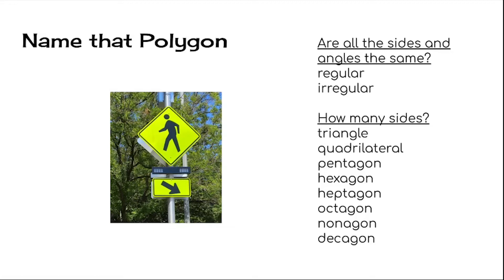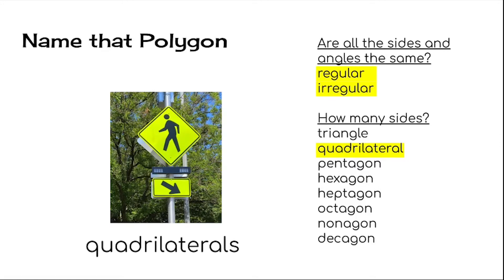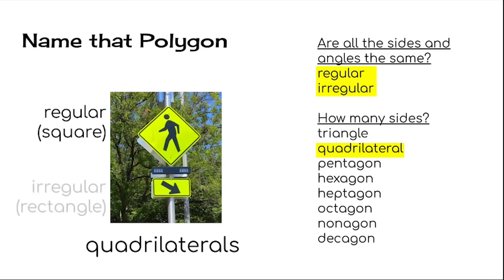I saw this sign, and it has two polygons on it — one is the part with the person walking, and the other is the part with the arrow. Are all the sides and angles the same? They are on the top figure with the person walking, but not on the bottom one — the sides are different lengths. Now let's think about how many sides these two figures have. That's right — they both have four sides. So what do we call four-sided figures? That big fancy word: quadrilateral. So these are both quadrilaterals. The one on the top is a regular quadrilateral — in this case, it's a square. The one on the bottom is an irregular quadrilateral — in this shape, it's a rectangle.